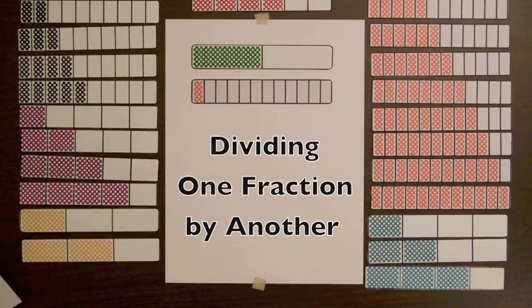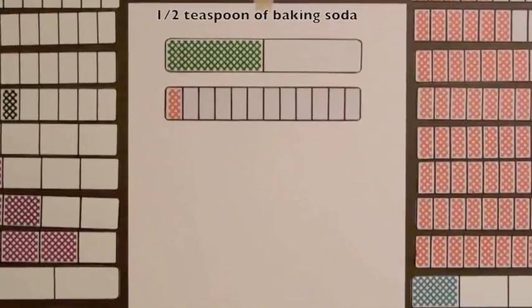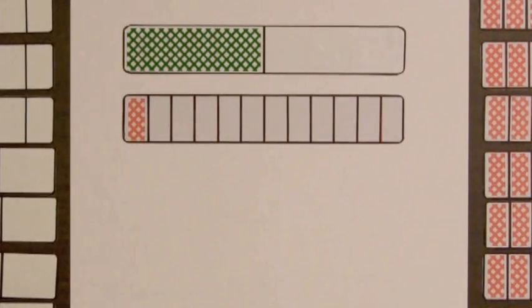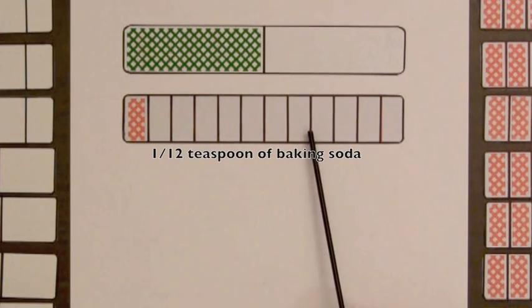Let's consider another example. If one-half teaspoon of baking soda is available, represented by the top bar, and one-twelfth teaspoon is needed for each pan of biscuits, represented by the lower bar, how many pans of biscuits can be made?